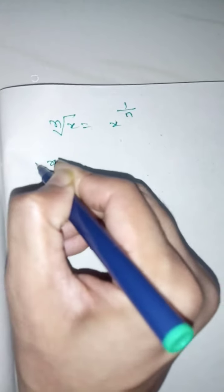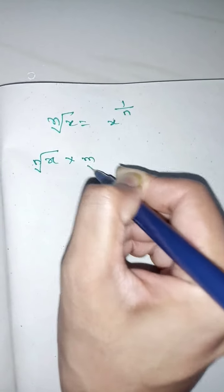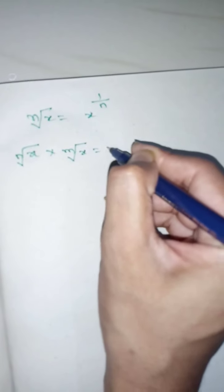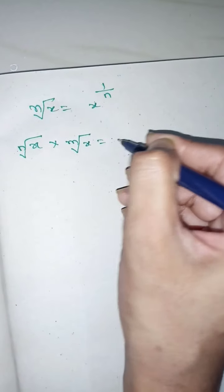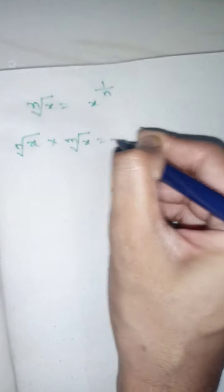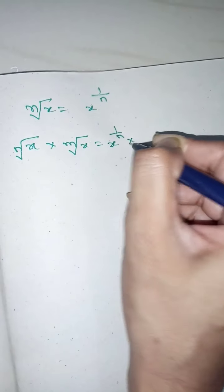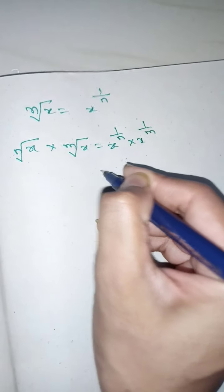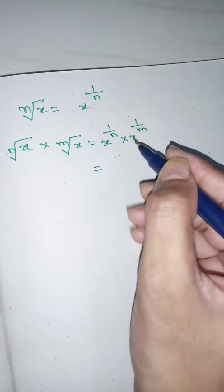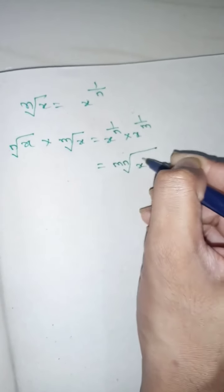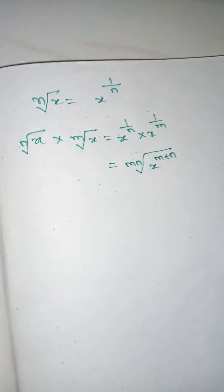Similarly, nth root of x into mth root of x equals — since bases are equal, powers should be added. Therefore x to the power of 1 by n into x to the power of 1 by m gives us the mth-nth root of x to the power of m plus n.